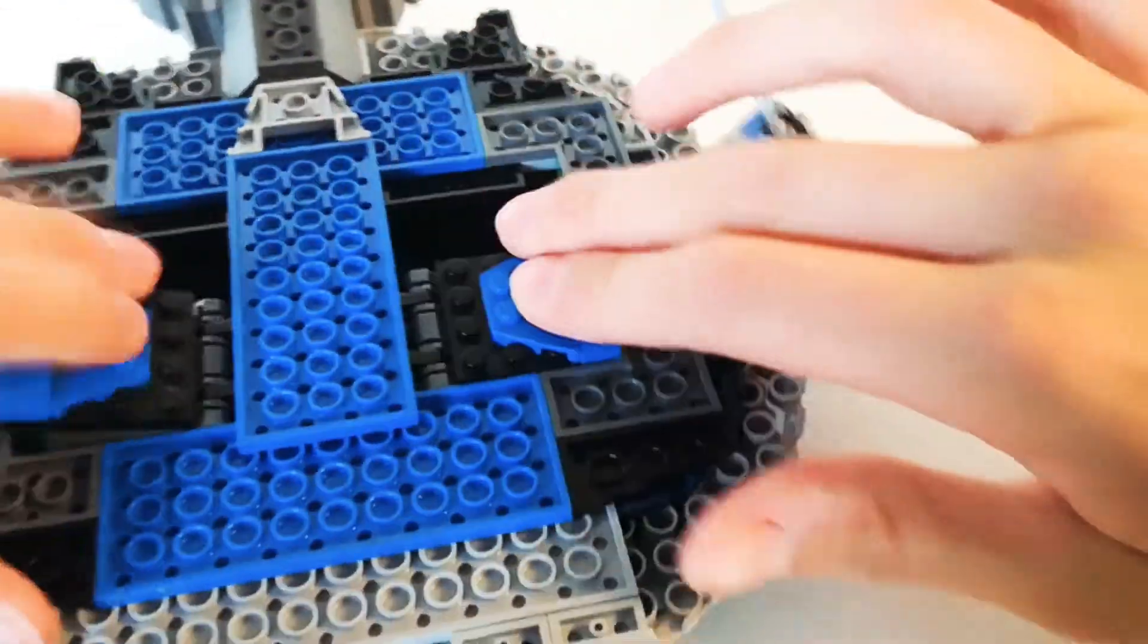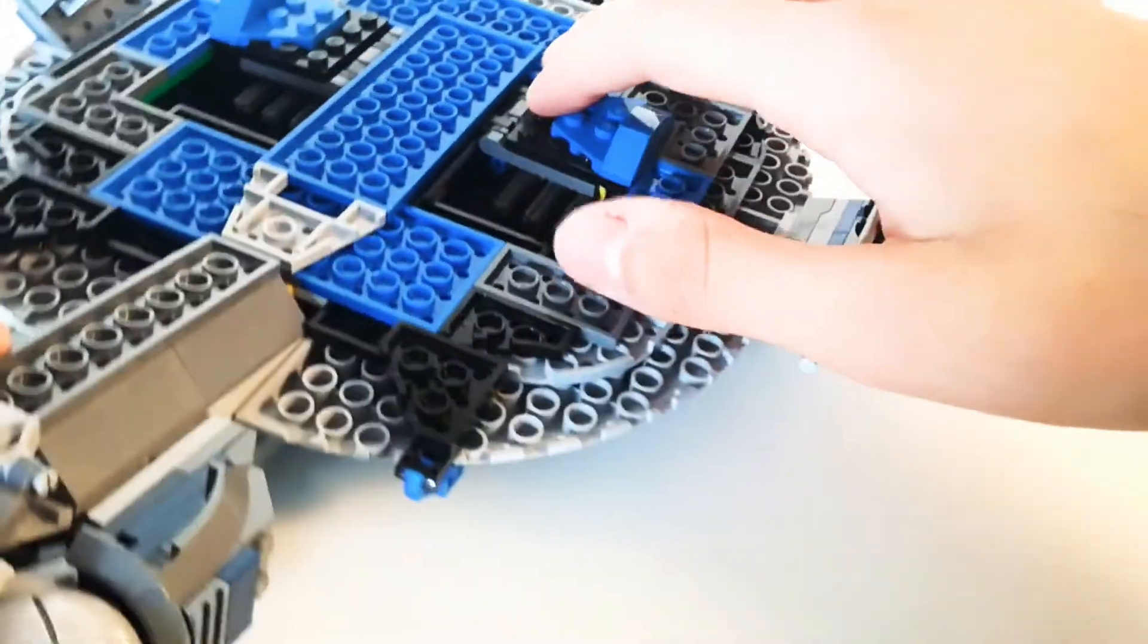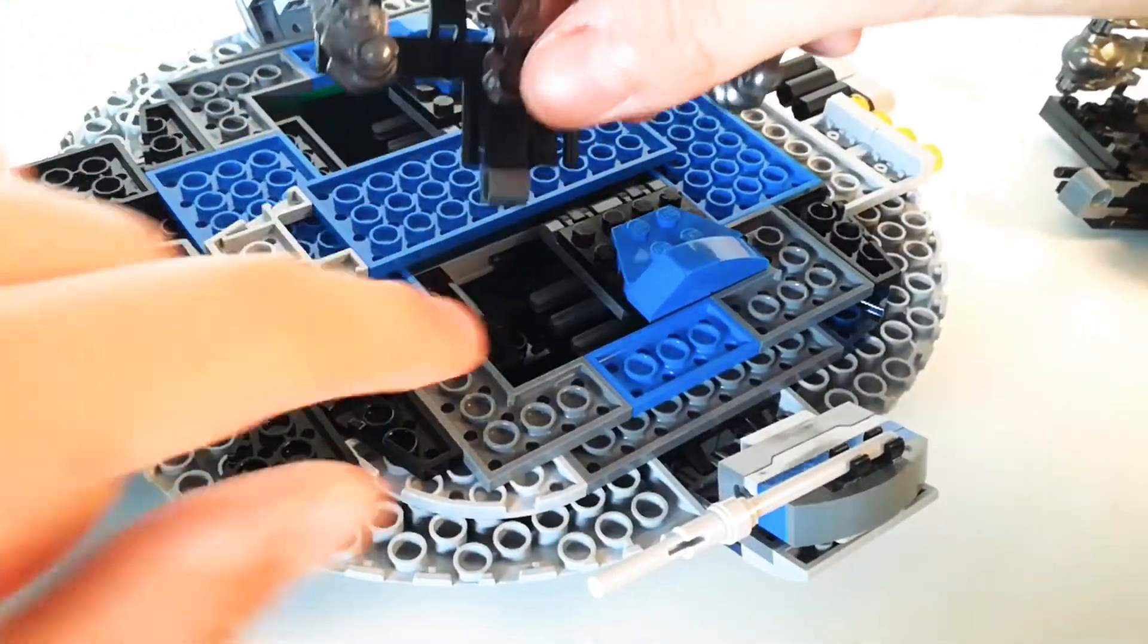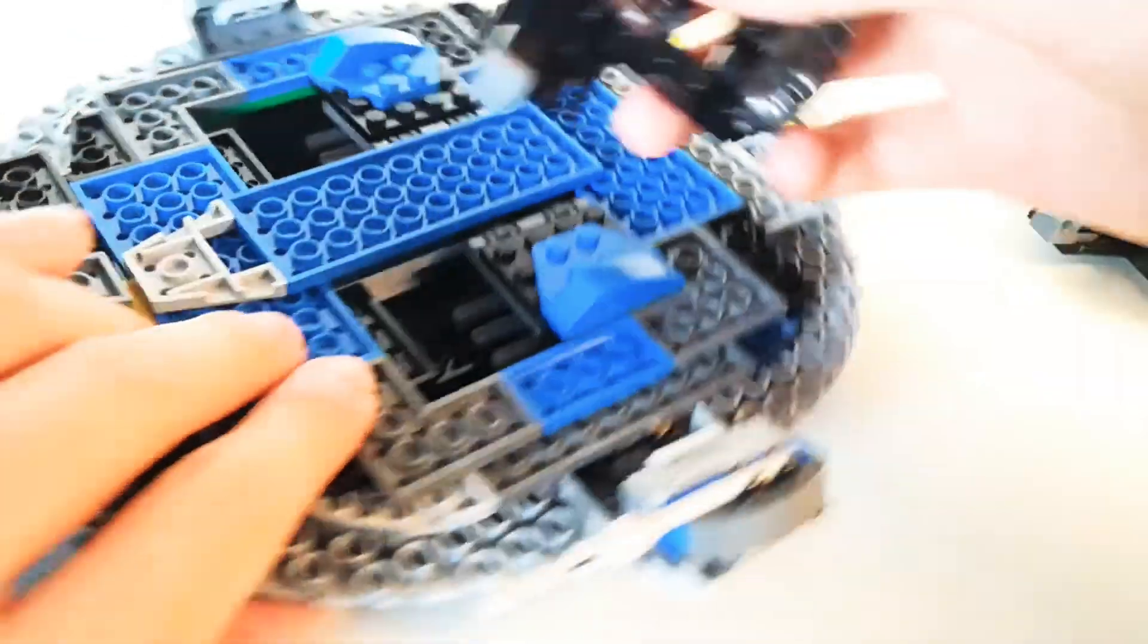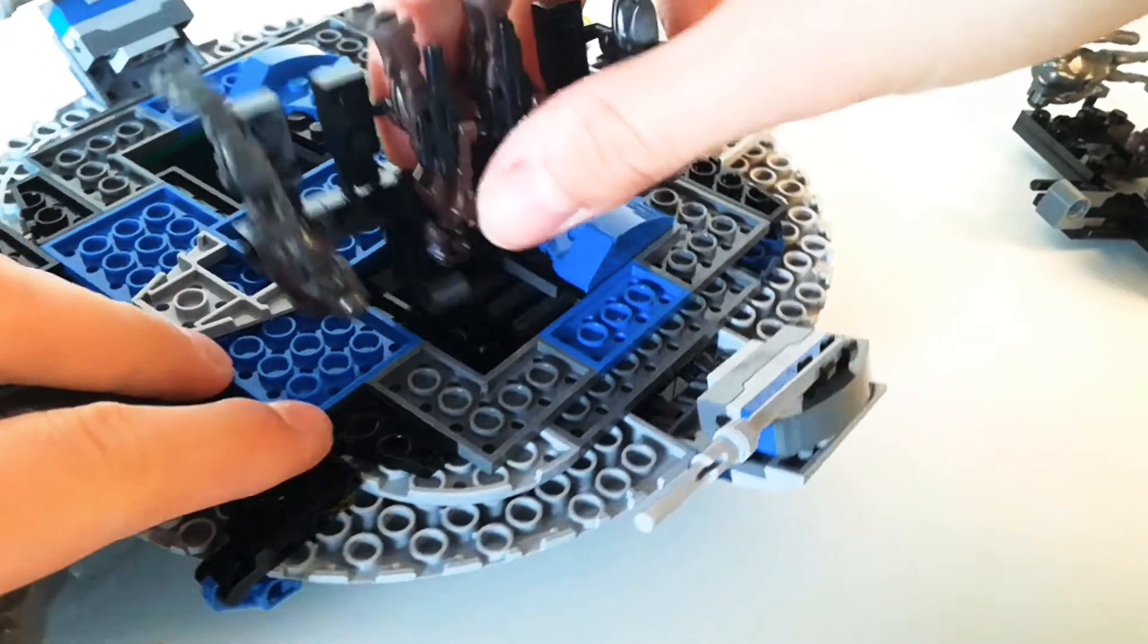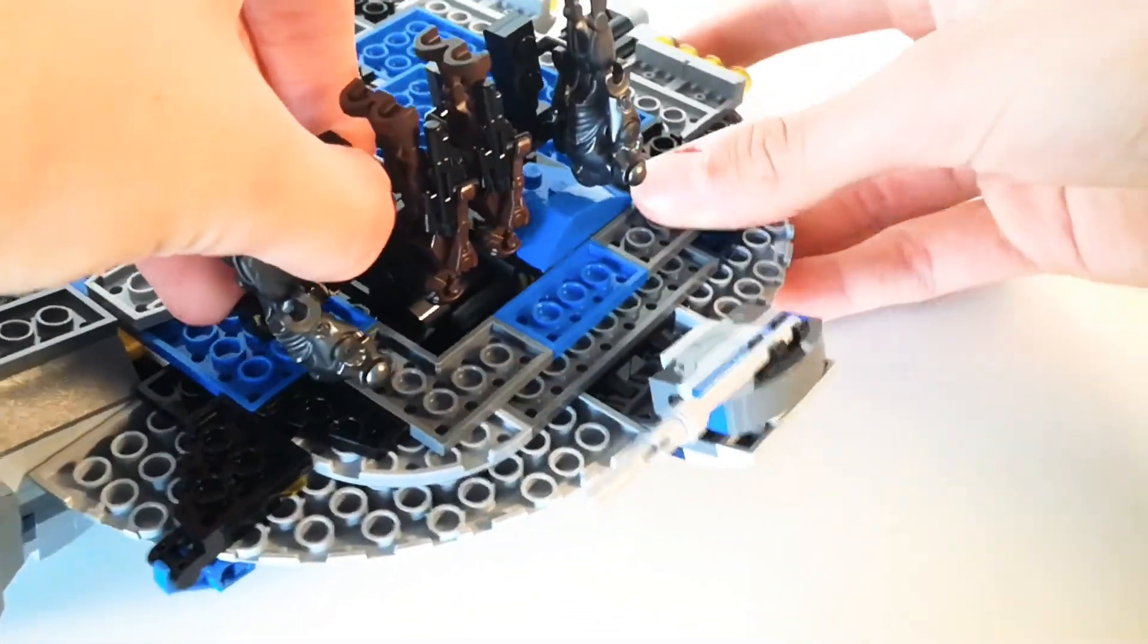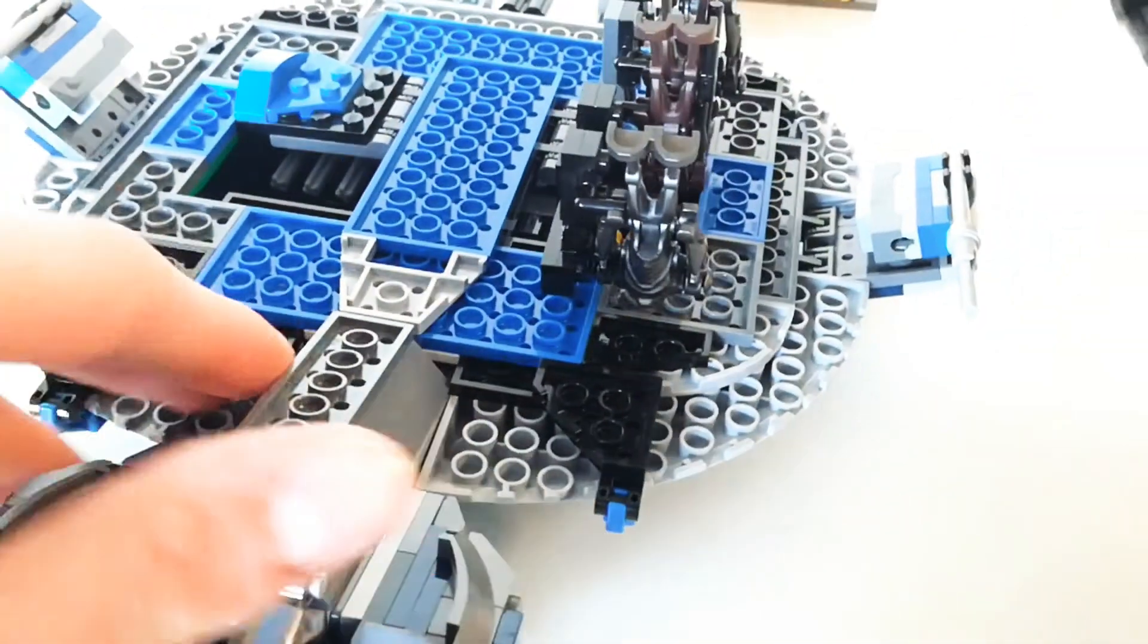First you grab this over here, make sure it's facing the right way. You put it on the middle axle already there, the middle one, and push it in like that. Then you do the same on the other side.